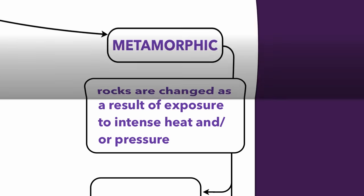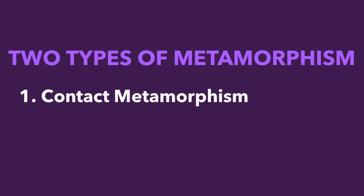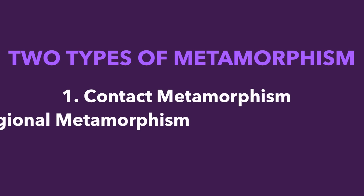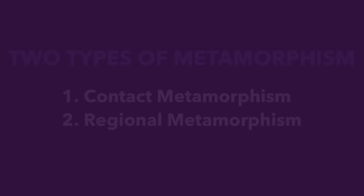There are two types of metamorphism that occur in nature. The first type is called contact metamorphism, and the second is called regional metamorphism. Let's talk a little bit about the difference between these two.